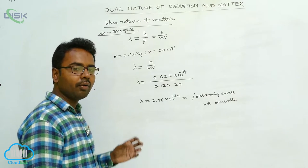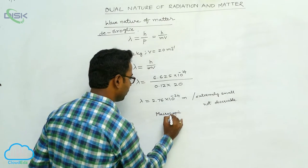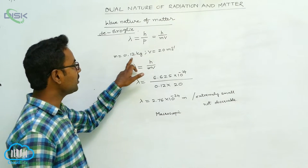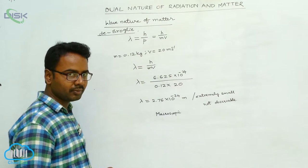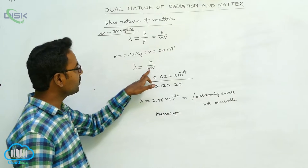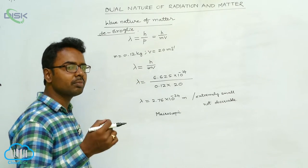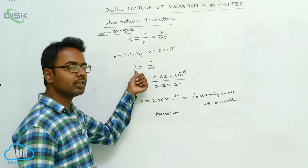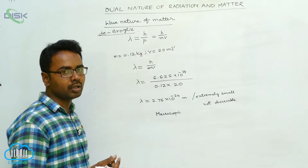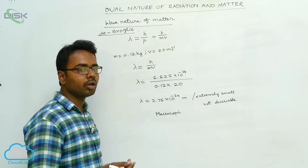From this we conclude that for macroscopic bodies — bodies having more mass and moving with more velocity — the matter wave wavelength is not observable. Here mass is 0.12 kg, which is considerable compared to elementary particles. For elementary particles with very small mass, the wavelength is observable. But when mass is large, the wavelength is extremely small and cannot be observed. Matter waves are associated with macroscopic bodies, but they have an extremely small wavelength and cannot be detected.